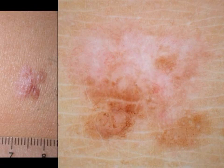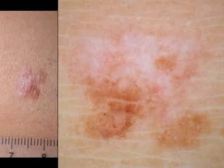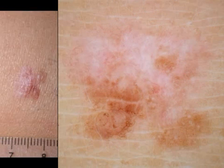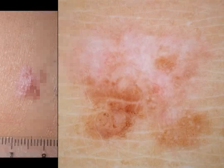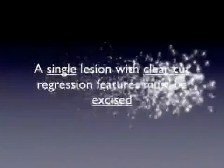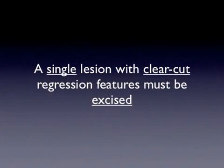Here, a melanoma with a high amount of regression — more than 50% of the lesion surface. Of note, the color of regression is whiter than the surrounding skin. Lesions like this should always be excised because of a much higher chance of dealing with a melanoma. At the bottom line, a single lesion with clear-cut regression features must be excised.